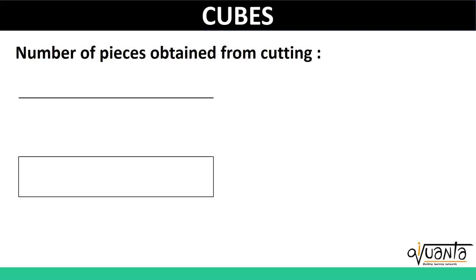Let us consider a one-dimensional figure like a line segment. What will be the number of pieces obtained by cutting it into several pieces? If you give one cut to a line segment, it will give us two pieces. If you make two cuts, we get three pieces. If we make three cuts, we get four pieces. So similarly, for n cuts we get n plus 1 pieces from a line segment or a one-dimensional figure.